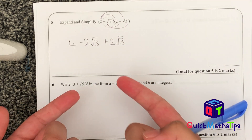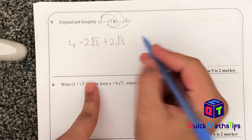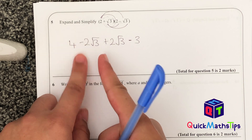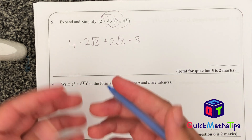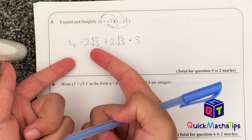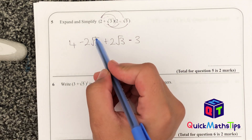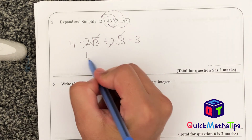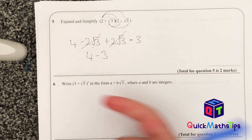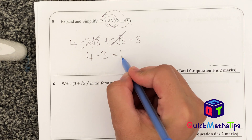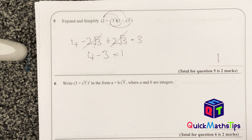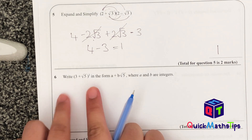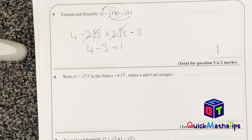A plus root 3 times a minus root 3: when root 3 is multiplied by root 3, the root cancels and you're left with just 3. Because one is positive and one is negative, the answer is negative 3. The minus 2 root 3 and plus 2 root 3 cancel out, and I'm left with 4 subtract 3, which gives me 1.